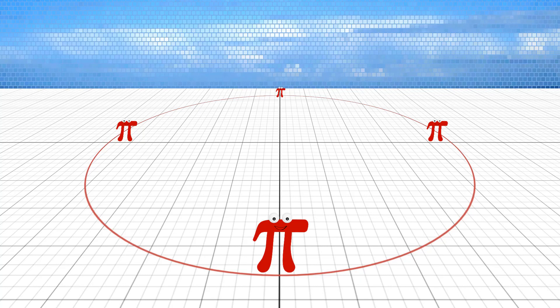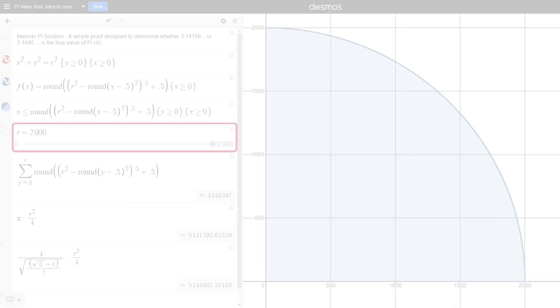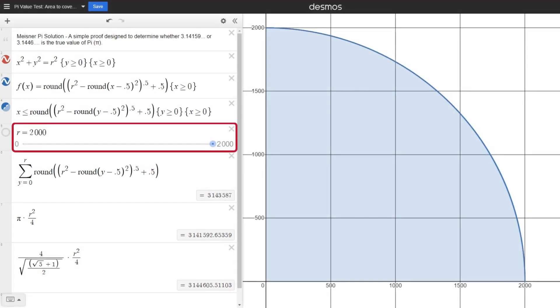And for the math lovers out there, here's a little bonus exercise for you. A radius of 2,000 can only reveal so much. What do you discover about the complete coverage area and its relationship to pi when the radius is 20,000, 200,000, 2 million or more?